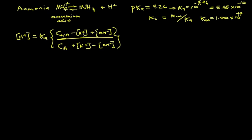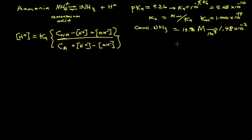Let's suppose that we take a stock solution of concentrated ammonia, which is typically about 14.8 molar — that's what a bottle of reagent ammonia would contain. Let's suppose that we dilute that down by a factor of 1,000-fold to 1.48 times 10 to the minus 2 molar. So that's our analytical concentration and that's the conjugate base. If nothing else has been added, there is no analytical concentration of the acid form, so that term becomes zero.